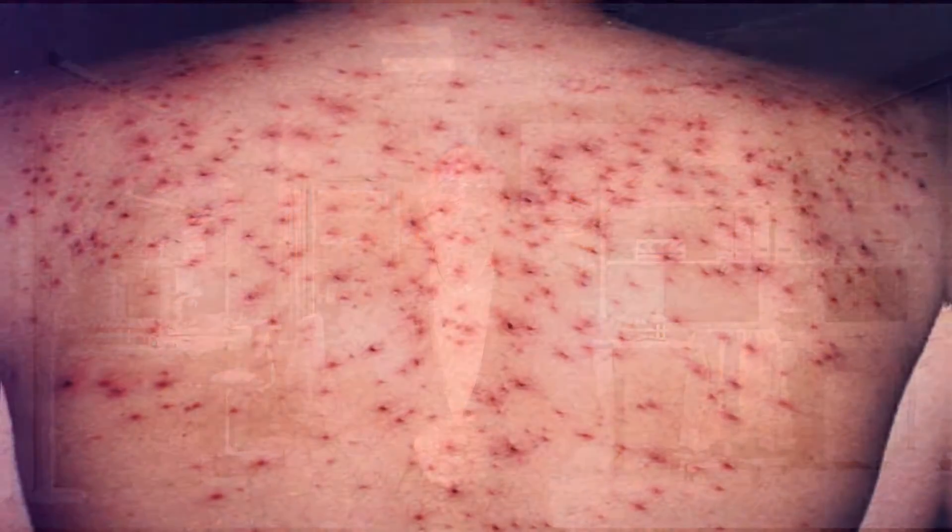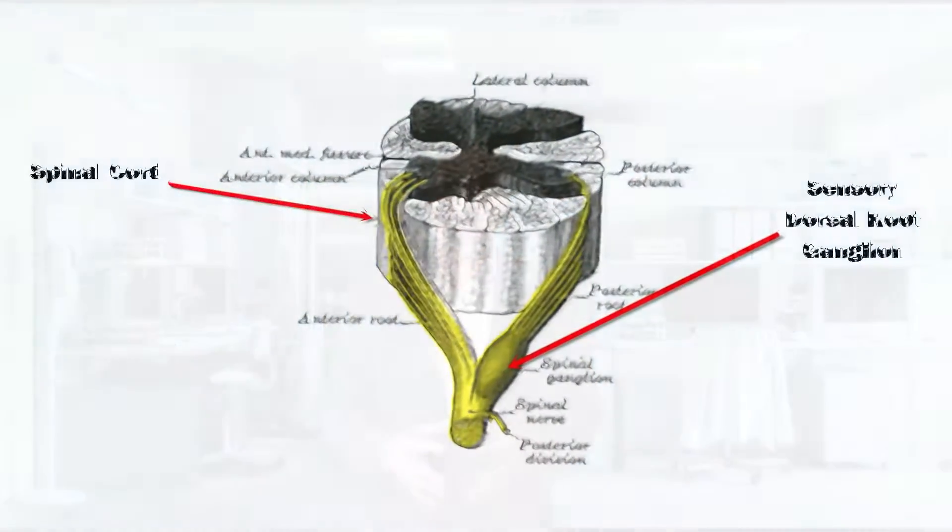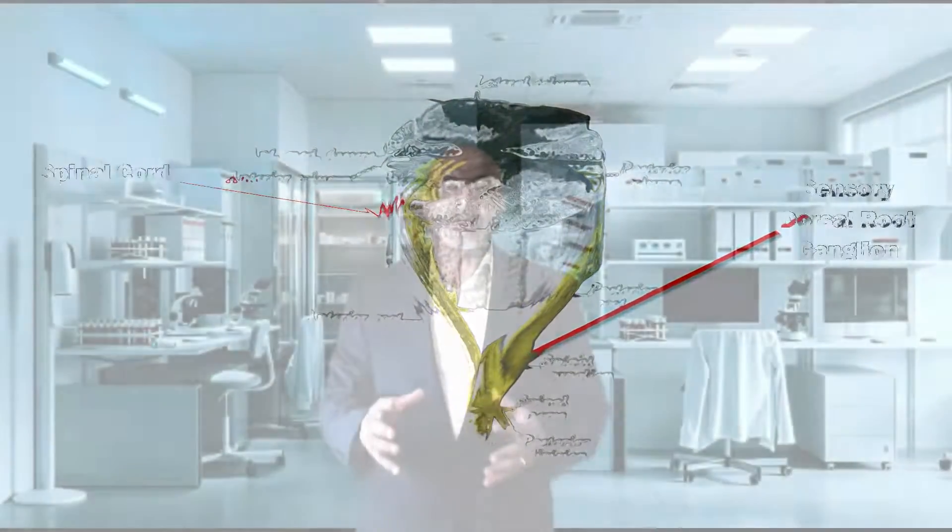Upon entering the airways, the virus replicates and is then transported to the skin and the nerves by white blood cells, most likely CD4 cells. After an incubation period of 10 to 21 days, the typical rash of chicken pox appears on the skin. The illness lasts for about 4 to 7 days, but the virus is not cleared from the body; rather, it takes up residence in the sensory nerve root ganglia of the spinal cord and of the brain.